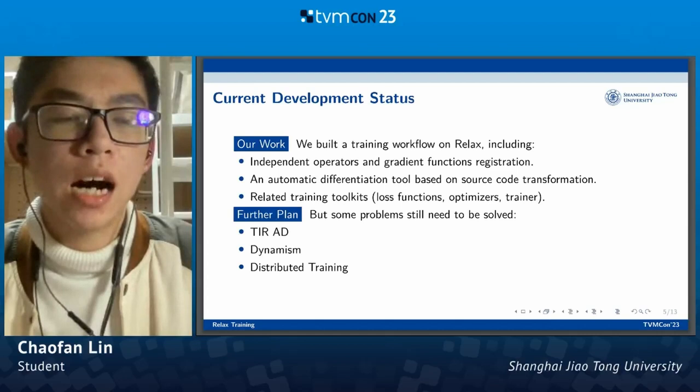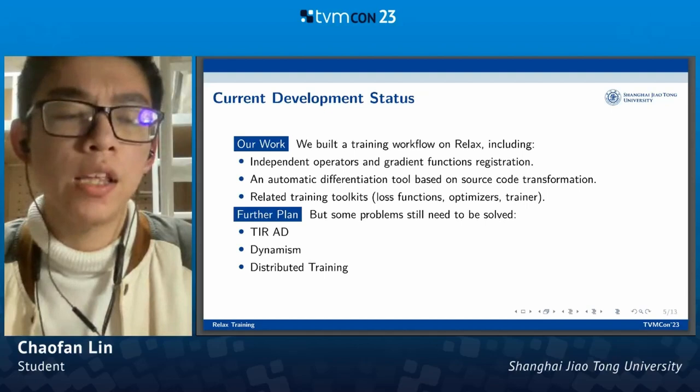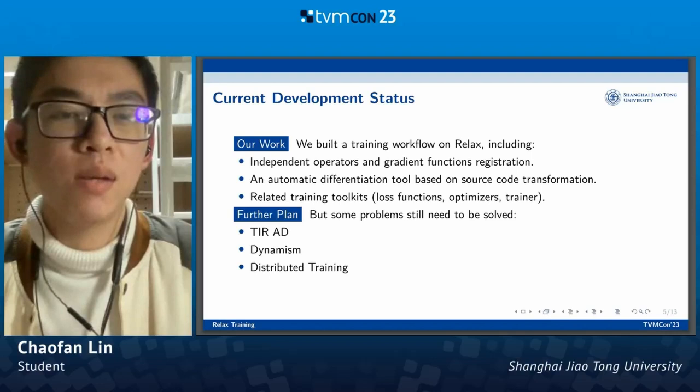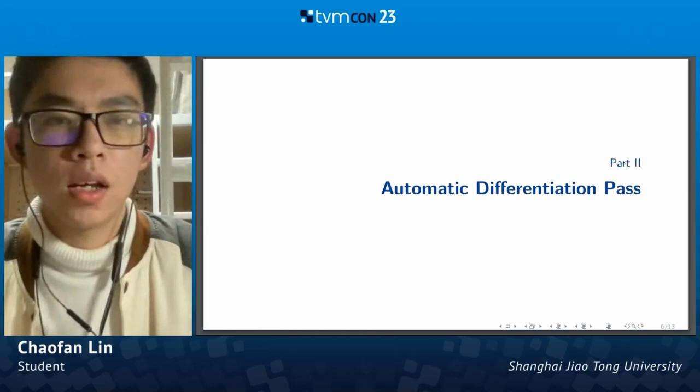Given that our work is just starting out, there are still some problems that need to be solved. We presented our work in a RELAX development meeting before and received many pieces of advice. For example, AD for TIR prim functions and dynamism — since one of the features of RELAX is dynamic shape — and distributed training is also a challenge. These are some feature directions we can work toward.